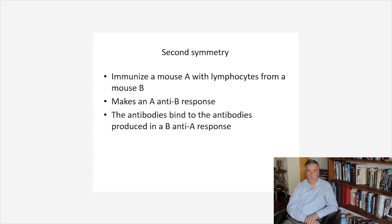We switch now to another phenomena called second symmetry, which is important in immune network theory. If we immunize a mouse A with lymphocytes from a mouse B, the mouse makes an A-anti-B response and the antibodies bind to the antibodies produced in the B-anti-A response.